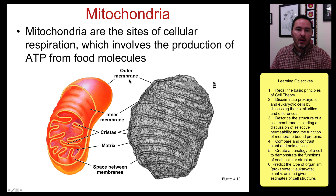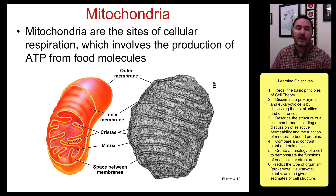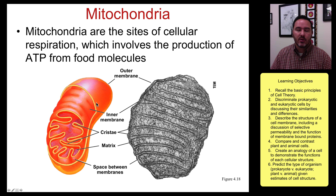The mitochondria are the sites of cellular respiration. This is where you produce the energy source of the cell, which we call ATP. ATP is always derived from food molecules or sugar molecules — sugar is broken down and the result is ATP. Mitochondria also have an inner and outer membrane with inner folding.